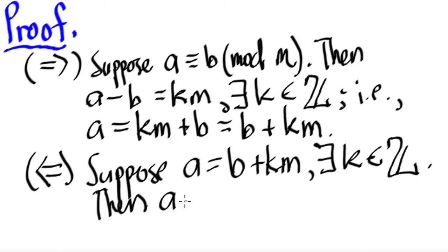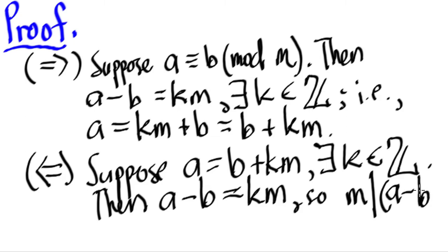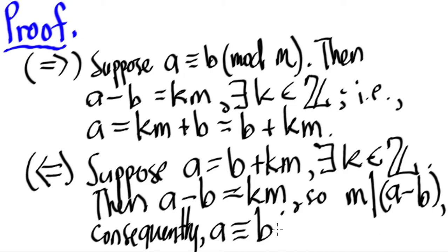Then, transpose the B to the other side, A minus B equals KM. That is, indeed, M is a multiple of A minus B. That is to say, consequently, we can say that A is congruent to B mod M. And that ends the proof.